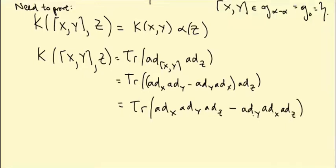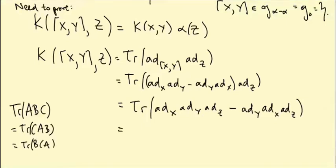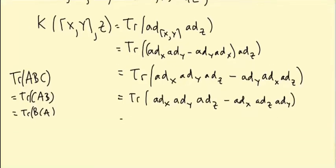So let's multiply the brackets. So we get trace ad X ad Y ad Z minus ad Y ad X ad Z. Now the trace is cyclic. You can if you have trace ABC that's the same as trace of CAB which is the same as trace of BCA. That's just true for any three matrices.